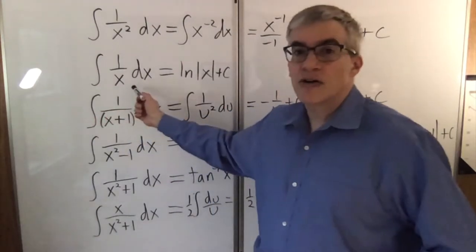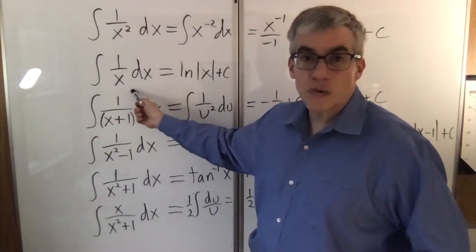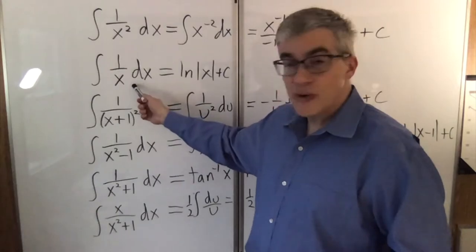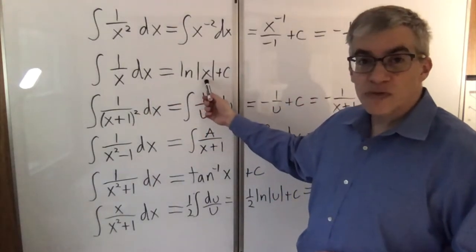This second one is also a power of x, but the power rule doesn't work. You'd be divided by zero. This one you have to memorize is the natural log absolute value of x.